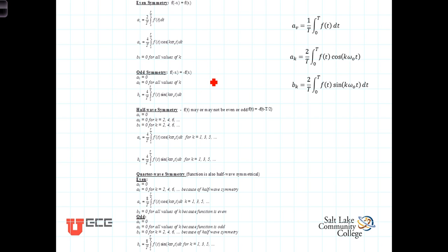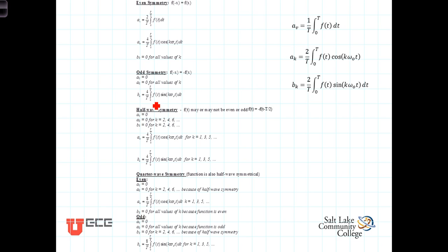We're going to look in a couple of videos ahead at graphically why — or at least try to get a feel for — what causes these characteristics. Finally, the b_k's can be obtained for an odd-symmetrical function by integrating over half of the period and then multiplying the results by 2. Ordinarily, b_k is 2 over T times the integral over the entire period. When there's odd symmetry, we only integrate over half the period and multiply the results by 2.